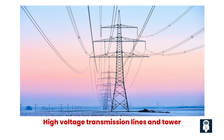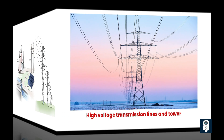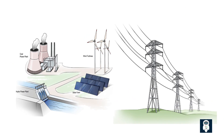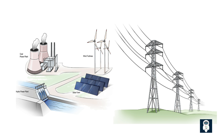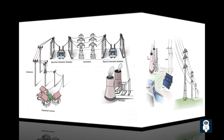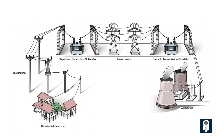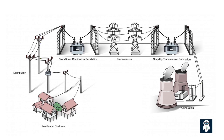You might be wondering why there are two power lines on each pole for high-voltage transmission lines. The primary reason is redundancy and increased capacity. By having two power lines, the system ensures redundancy in case one line fails or needs maintenance. It allows for uninterrupted power supply even if one line is out of service. Imagine the impact if an entire region lost power due to a single line failure. Moreover, having two lines doubles the capacity of the transmission system, allowing for a higher amount of electricity to be transmitted, meeting the increasing demands of industries and households.